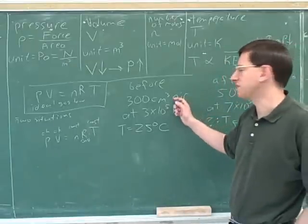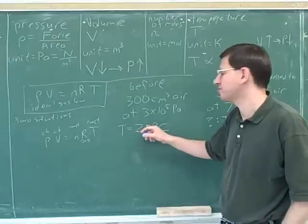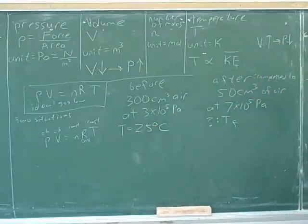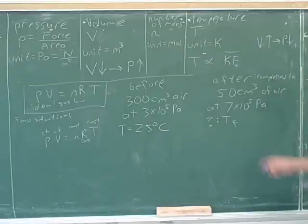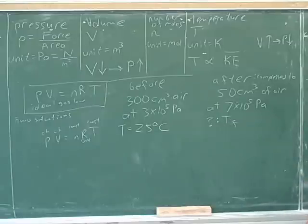Okay, so we start with 300 cubic centimeters of air at 3 times 10 to the 5th pascals, and the initial temperature is 25 degrees Celsius, and then it's going to get compressed to only 50 cubic centimeters at 7 times 10 to the 5th pascals, and they're asking us to find this temperature.